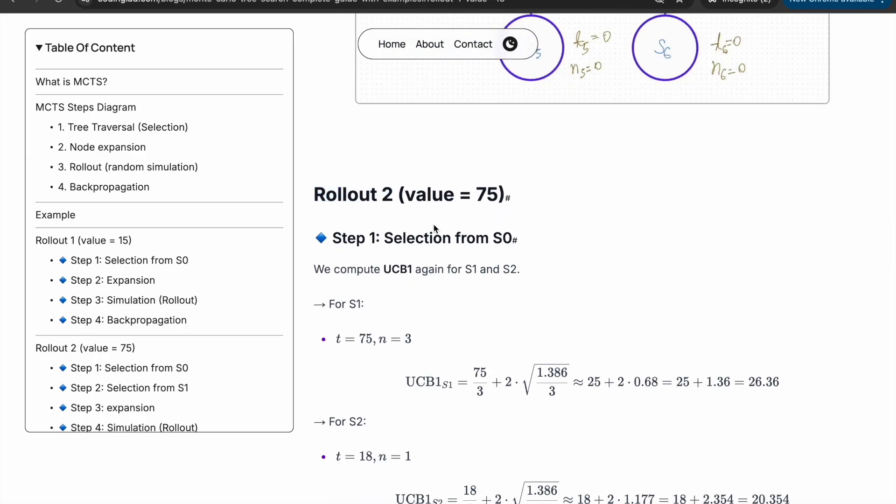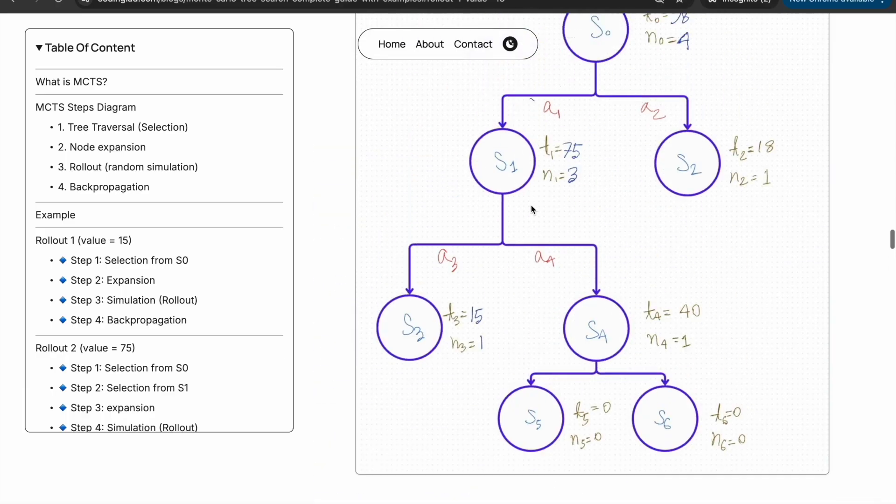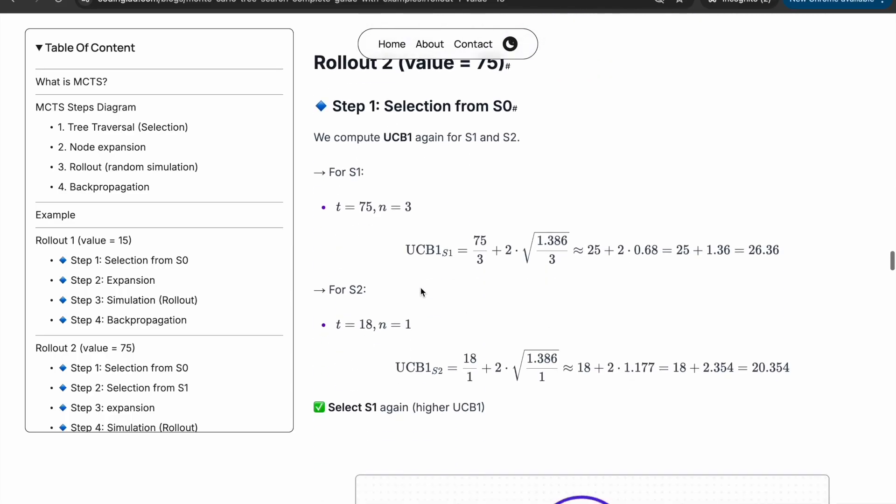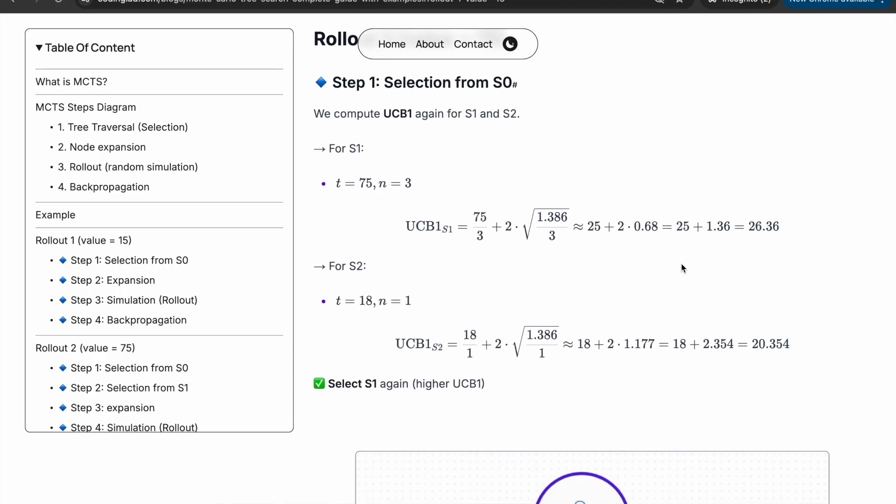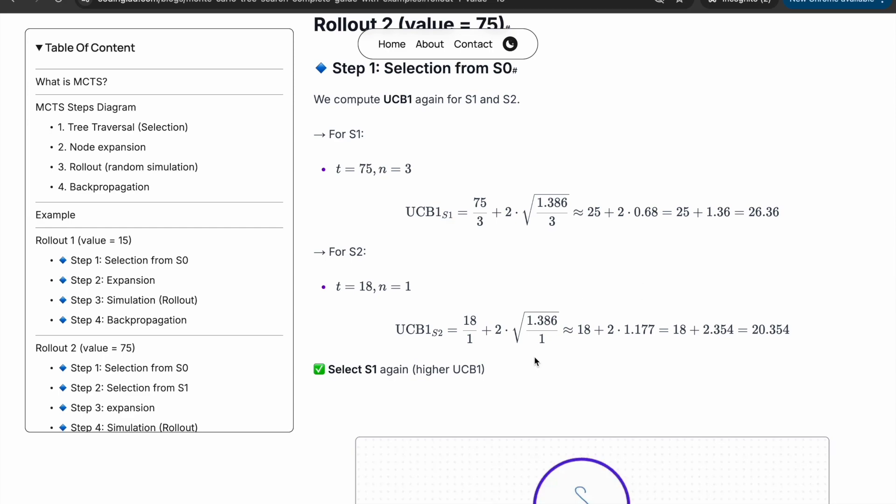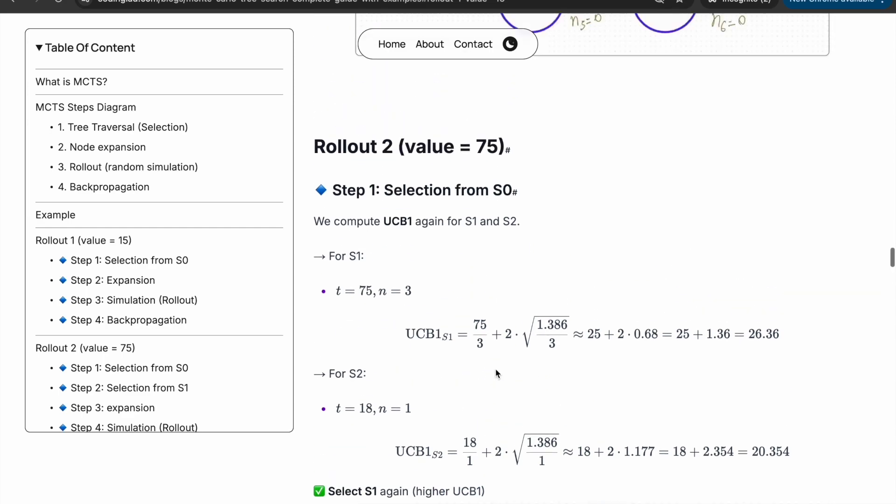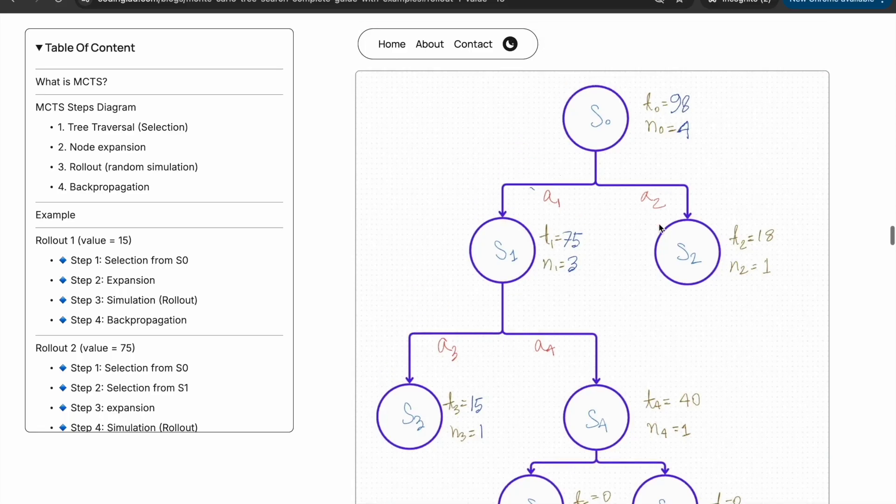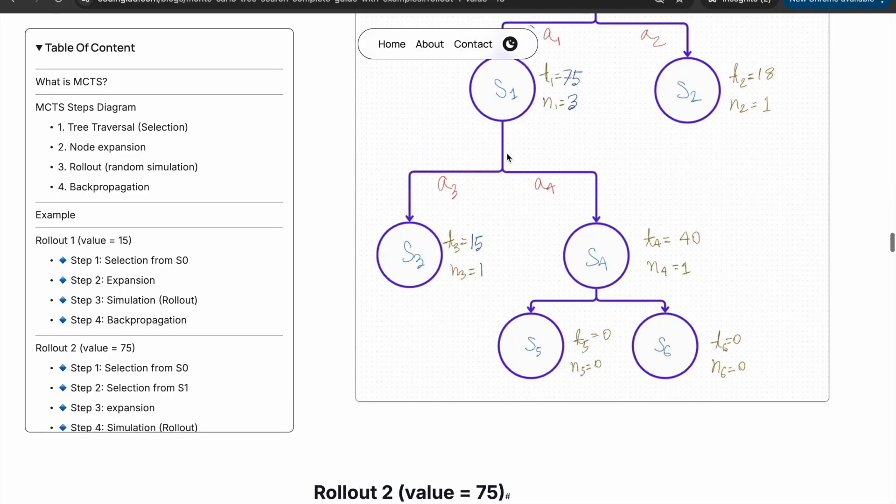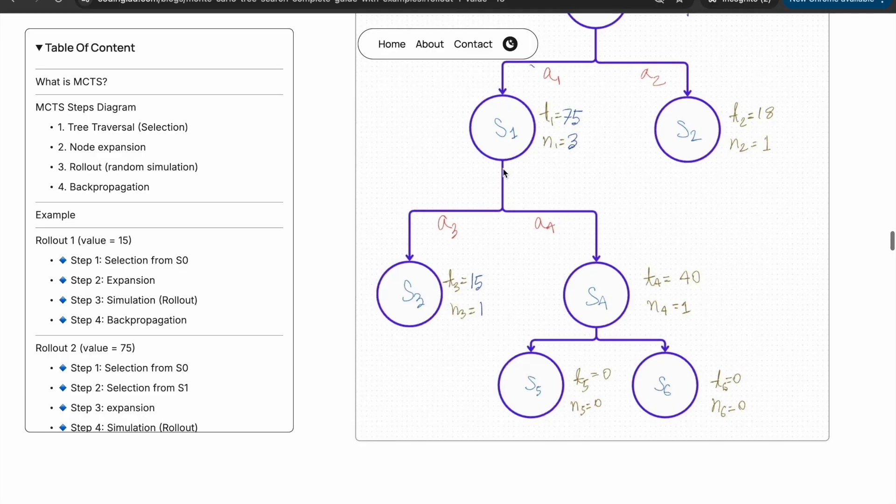Then comes rollout 2. In the same way, we will select from s0, either s1 or s2. We will calculate the UCB1 value for s1 and s2. We will select again s1 because we are getting higher UCB1 value for s1. Here t1 is 75, n1 is 3, and for s2 it's 18 and 1. The parent node n is 4. We are selecting s1.